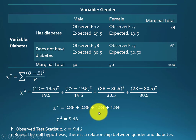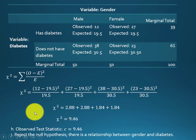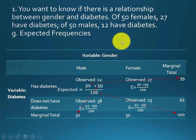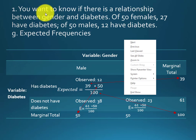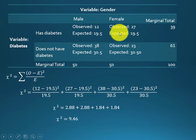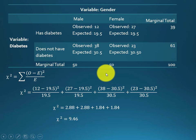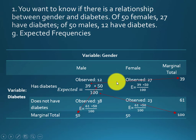Checking this value against the critical value table for chi-square, the conclusion is to reject the null hypothesis. We conclude that there is a relationship between gender and diabetes. In plain English, gender has an influence on diabetes disease.